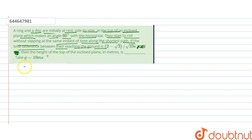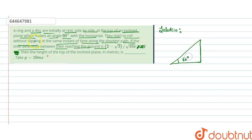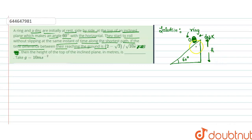So we start the explanation. We write down the solution. We have an inclined plane creating an angle of 60 degrees. We have a ring and a disc placed here on the inclined plane, and this distance is h.